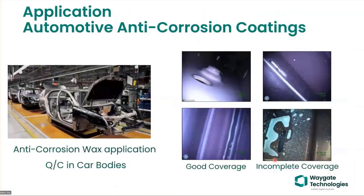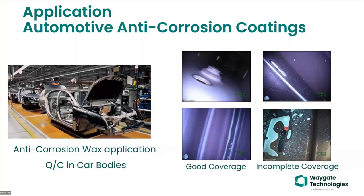In the automotive industry, the wax applied as anti-corrosion material inside door panels, fender panels, and chassis contains small flakes of material that fluoresce under UV inspection. You can see here complete coverage versus spotty coverage. Remote visual UV can be used for quality control inspection of anti-corrosion coatings.